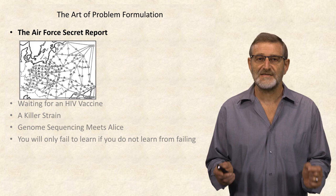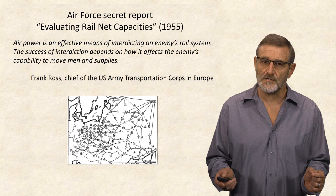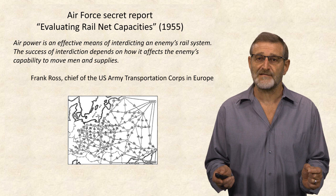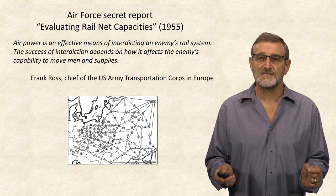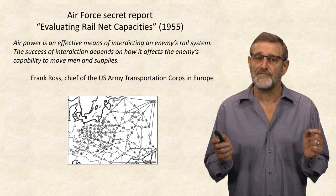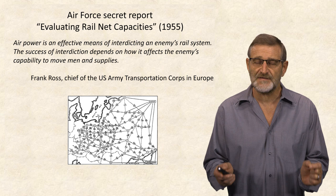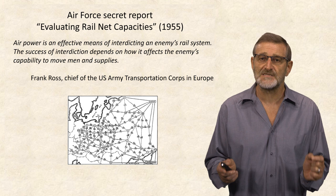The first real-life problem we will discuss came from a secret Air Force report prepared during the Cold War. General Ross was interested in interdiction — bombing the Soviet railway network to disrupt transportation of men and supplies. But the Soviet railway network was so vast that it was only feasible to bomb a few segments. General Ross needed advice on which specific segments to bomb. He had neither a problem formulation nor an algorithm for the interdiction problem yet.